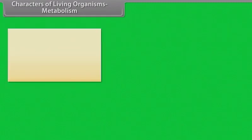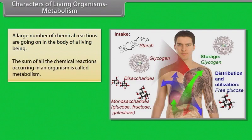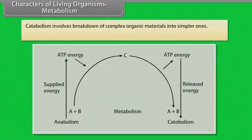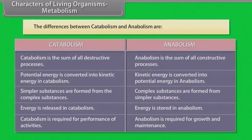A large number of chemical reactions are going on in the body of a living being. The sum of all the chemical reactions occurring in an organism is called metabolism. Metabolism has two main types: catabolism and anabolism. Catabolism involves the breakdown of complex organic materials into simpler ones. Anabolism involves the building up of complex organic substances from simpler ones.